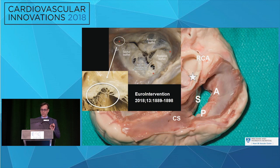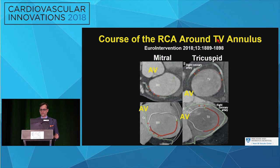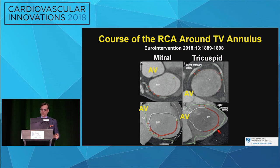On the mitral side, the circumflex artery is close to the mitral annulus, typically on the lateral portion where the P1 leaflet attaches. In the tricuspid valve there are two points of close proximity: one more anterior along the anterior leaflet, and another more posterior along the posterior leaflet attachment, where the interaction between the right coronary and the tricuspid annulus tends to be closest. A lot of it has to do with coronary dominance — a dominant right coronary artery typically has a closer association with the annulus than a non-dominant one.